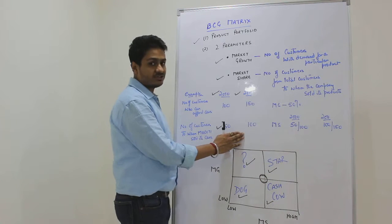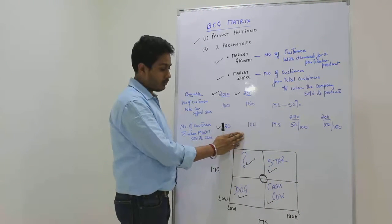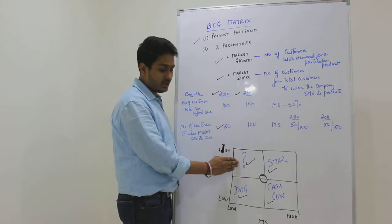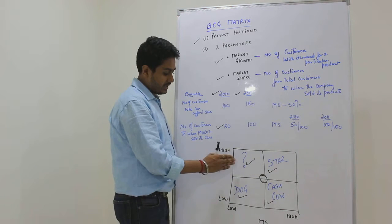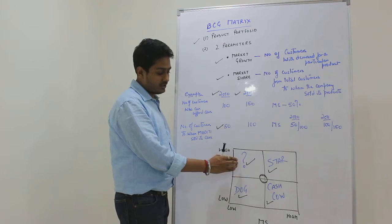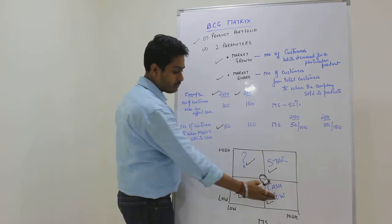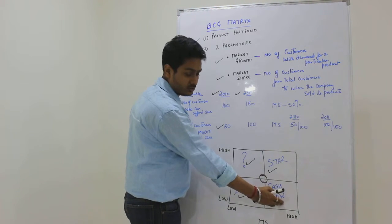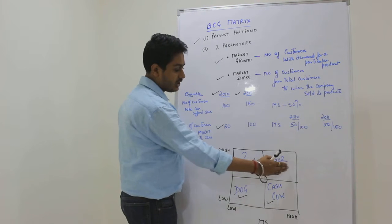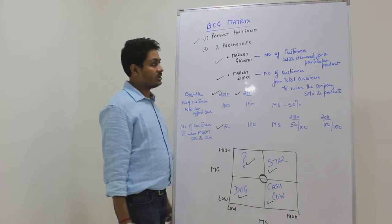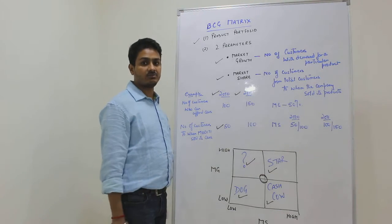Now why is the BCG matrix important? Primarily because it will give a visual depiction to the company of its products, which will enable the company to understand the level of risk it has across the different categories. Any company would not like to have too many cash cows or too many dogs. Star is an area the company would feel more comfortable with. That's about BCG matrix.